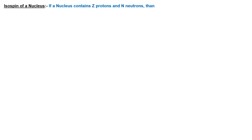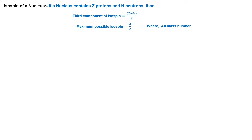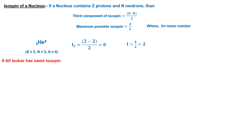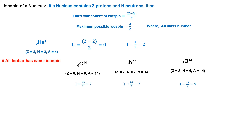The proton and neutron each have isospin 1/2. For a nucleus with Z protons and N neutrons, the third component of isospin is given by (Z − N)/2, and the maximum isospin of the nucleus is half the mass number. For example, the helium nucleus consists of two protons and two neutrons, so its I3 = 0 and its maximum isospin is 2. All isobars of any nucleus — nuclei with the same mass number — have the same isospin. For example, carbon-14, nitrogen-14, and oxygen-14 are isobars with isospin 7, though their third components of isospin are different.